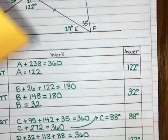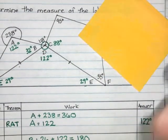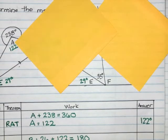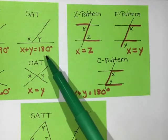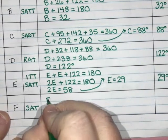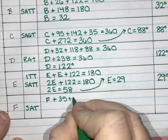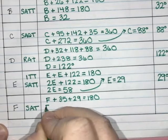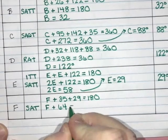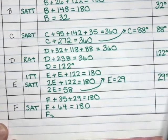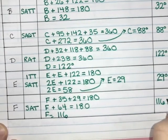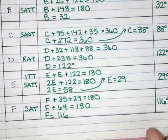Now we're down to F. F and 35 degrees and 29 degrees make a straight line. Straight lines add to 180 degrees — that is SAT, the supplementary angle theorem. So F plus 35 plus 29 equals 180. Adding 35 and 29 gives 64; subtracting from 180 gives 116 degrees. So our final answer, angle F, is 116 degrees. That was a lot of work!